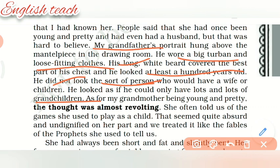The author could never imagine that once his grandmother was young and pretty. 'As for my grandmother being young and pretty, the thought was almost revolting.' Revolting means cannot believe. The author couldn't imagine it because from childhood onwards, for the past 20 years, he had only seen her as aged. She often told them of the games she used to play as a child, which seemed quite absurd and undignified, and they treated these stories like the fables she used to tell them.